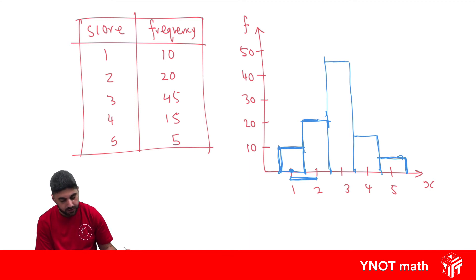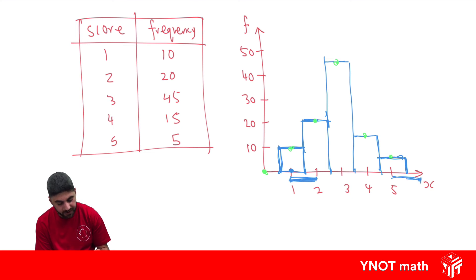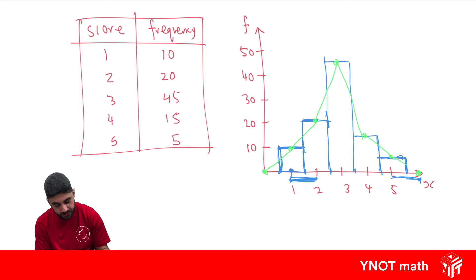The polygon starts in the corner down here and goes to the middle of every column — to there, then to there, to there, to there, and to there. And then that gap we were talking about here, we need to make another gap here, and that's where our polygon comes back down to on the line. Then we join all the dots together with straight lines to form our polygon.